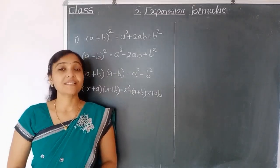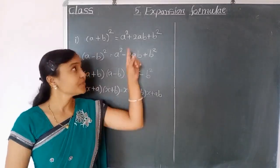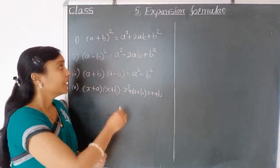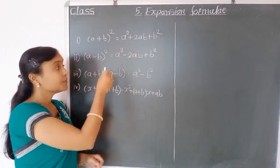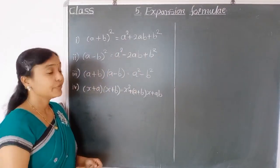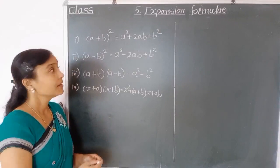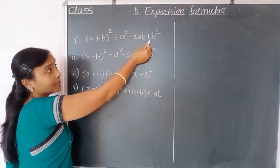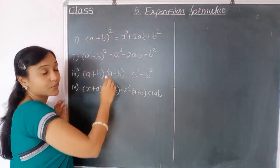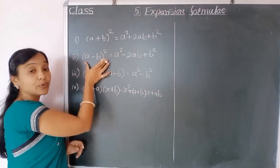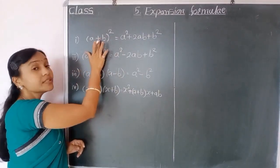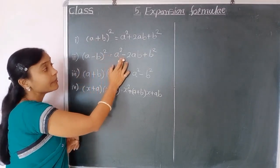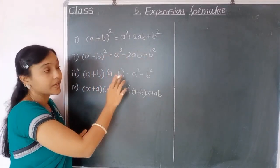Good morning students, today we start our 5th chapter: expansion formulas. We already seen these formulas last year, but today we again learn: a plus b bracket squared equals a squared plus 2ab plus b squared, and similarly, a minus b bracket squared equals a squared minus 2ab plus b squared.